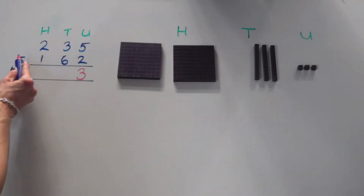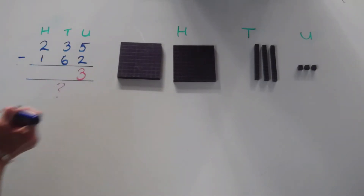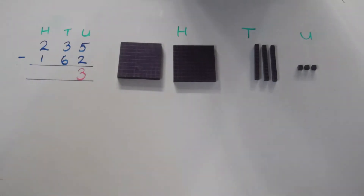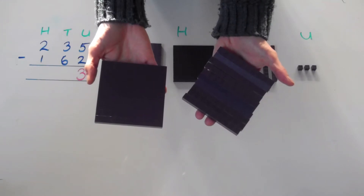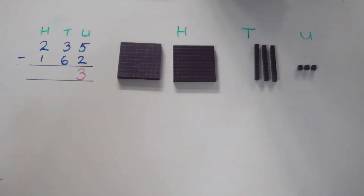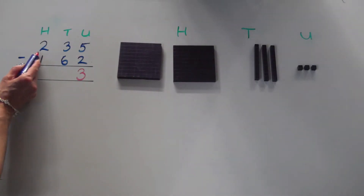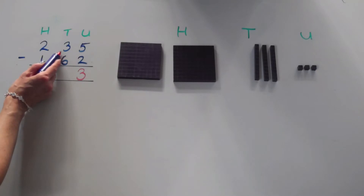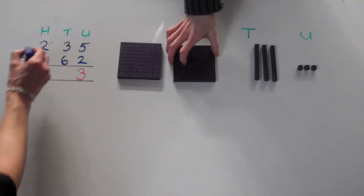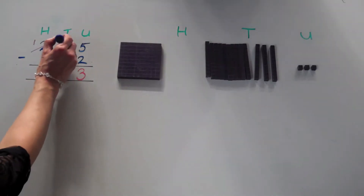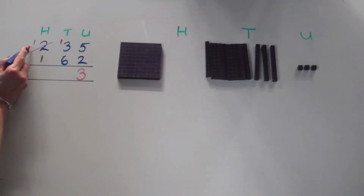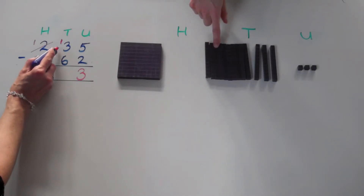Let's move on to the tens column. We've got three tens and we need to take away six tens. How can we take away six from three? We haven't got enough. But we need to remember that we can exchange one hundred for ten tens. That's going to help us with this calculation. So, I am going to exchange one hundred for ten tens, so I now have one less hundred in the hundreds column and I have ten more tens in the tens column.